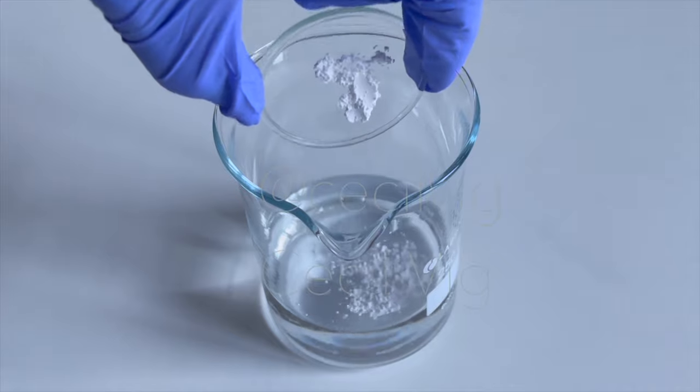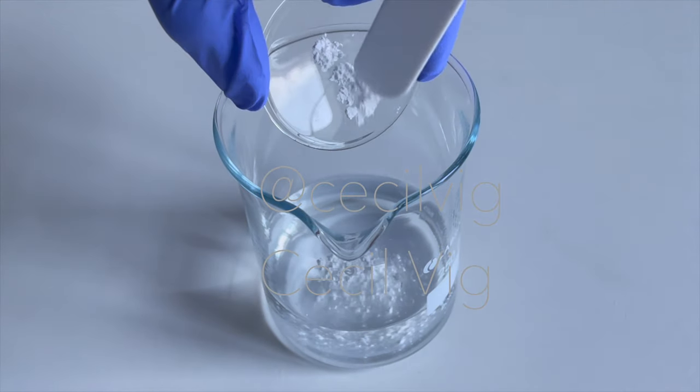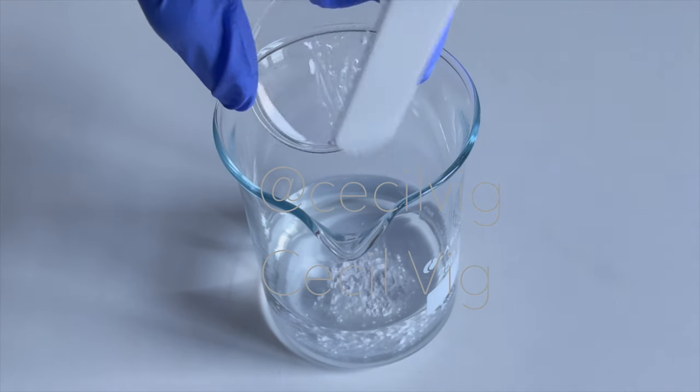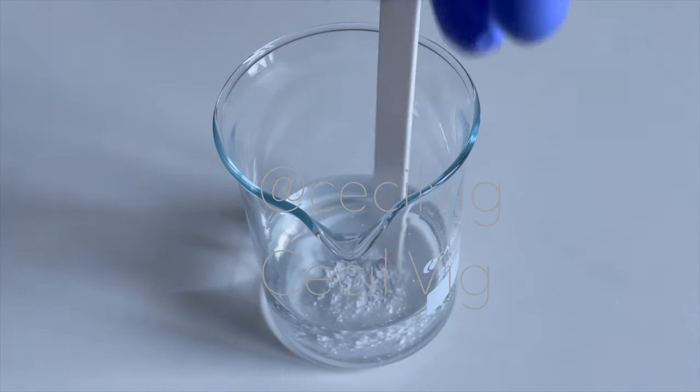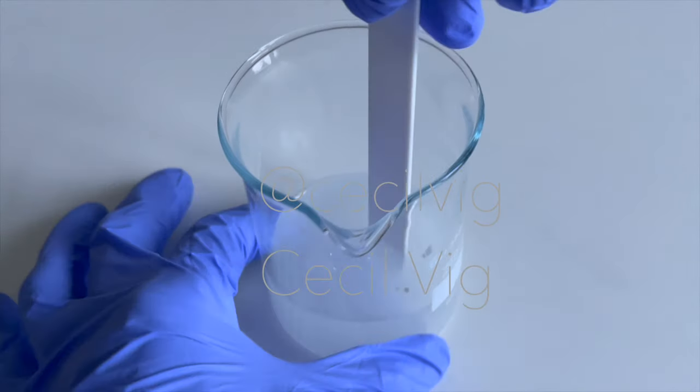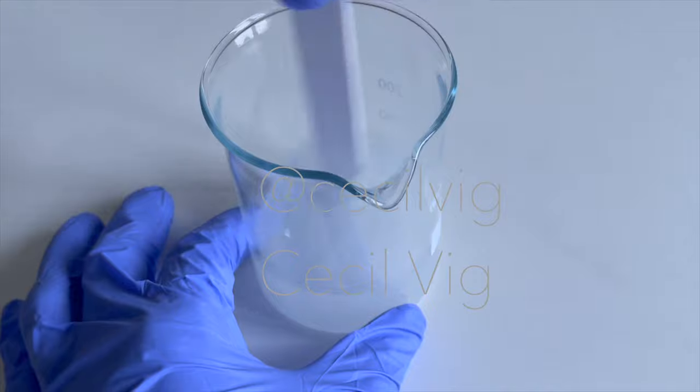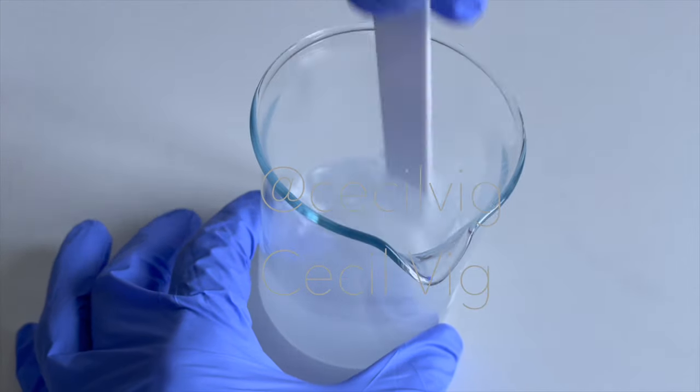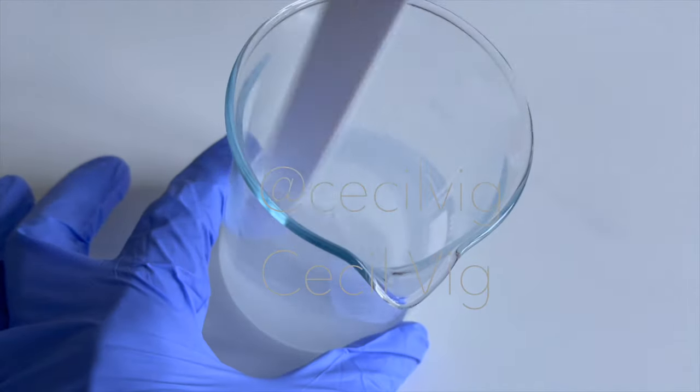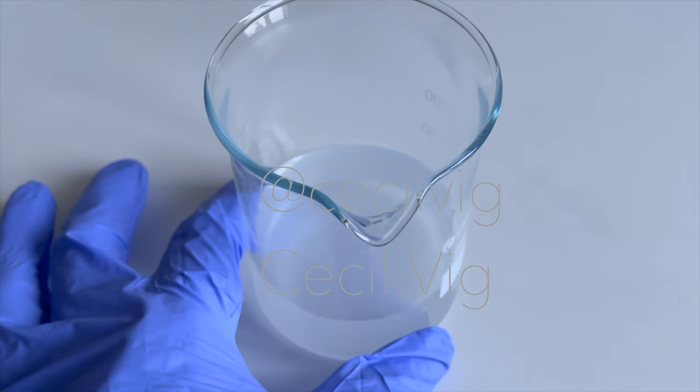Allantoin moisturizes, soothes itchiness and heals damaged skin. It can be used on a daily basis. It has strong healing and soothing properties and improves dull skin. After mixing in the allantoin, we add the glycerin.